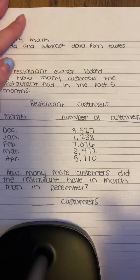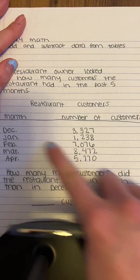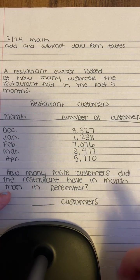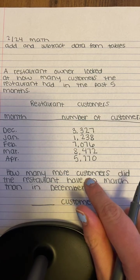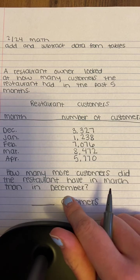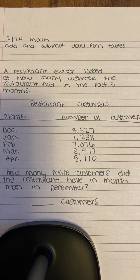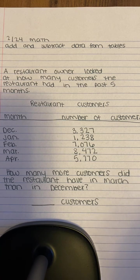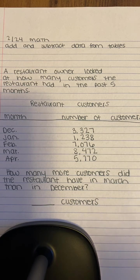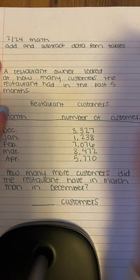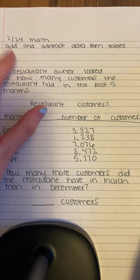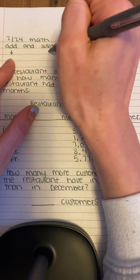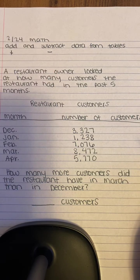So right here is the month and the number of customers. We're trying to see how many more customers did the restaurant have in March than in December. We have to think: are we going to be using addition or subtraction? If they're asking for the total amount of customers, we would use addition. But they want to know how many more came in one month, so we're going to use subtraction — they're asking for the difference.